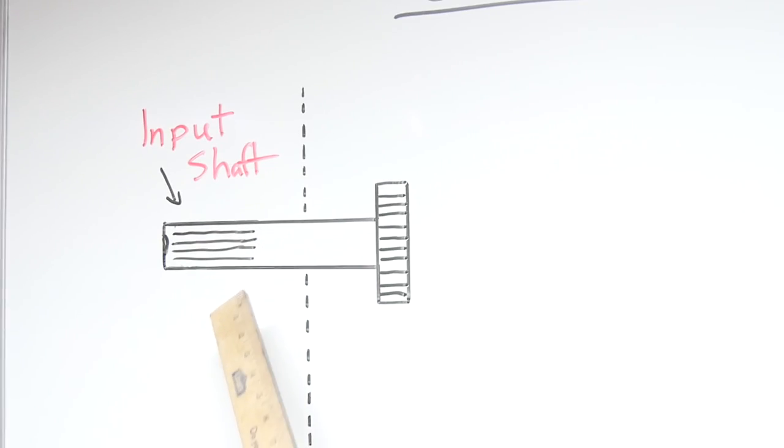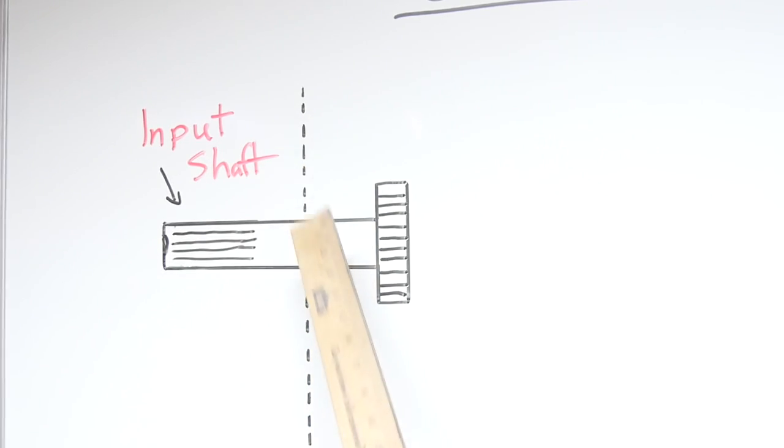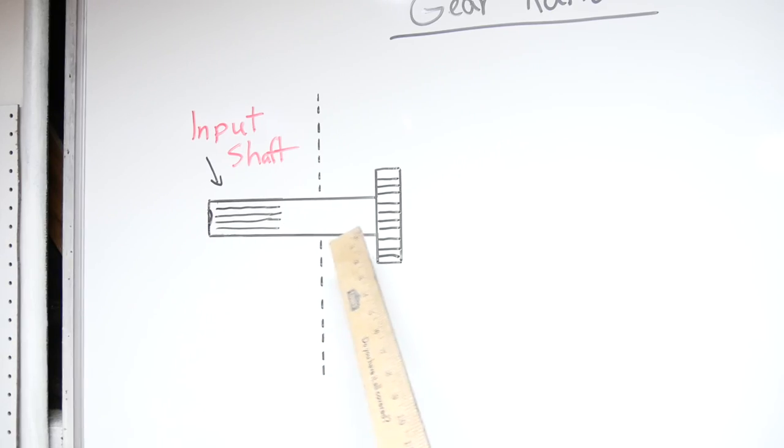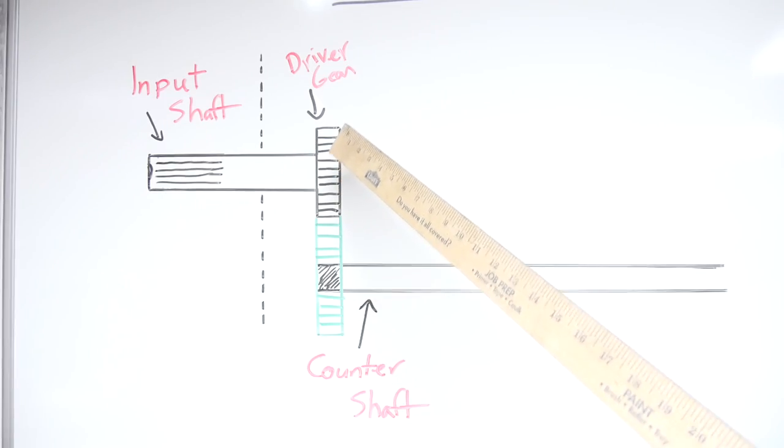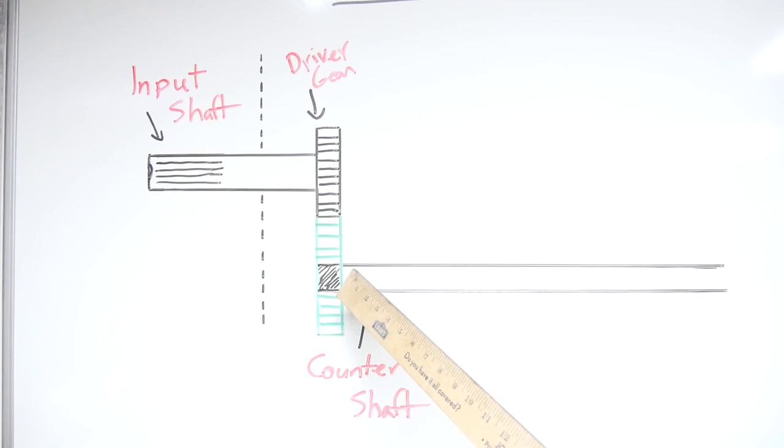So with that said, we'll start at our input shaft into our transmission housing. As you can see, inside our transmission housing, our input shaft is connected to our input shaft gear. Actually, let's call this our driver gear as it's connected directly to the input shaft. And it runs at the same RPM as our input shaft. So from there, power travels through our driver gear down to this gear, which is connected or attached to our counter shaft.